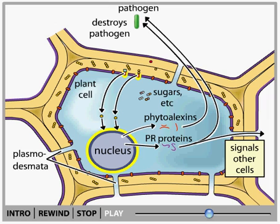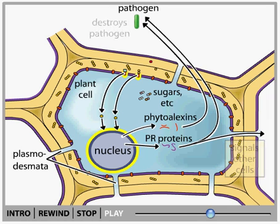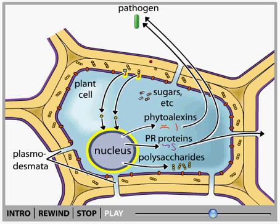When a plant encounters a pathogen, one of its first responses is to produce polysaccharides. These polysaccharides can strengthen cell walls, making it harder for the next pathogen to break through. They can also plug plasmodesmata, preventing certain pathogens such as viruses from migrating to neighboring cells.